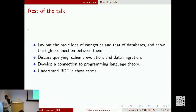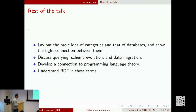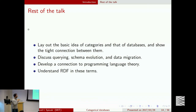In the rest of the talk I'll give a more actual mathematical treatment of the tight connection between categories and databases, and talk about schema evolution, querying, and migrating data. Time permitting, we'll touch on a connection to programming language theory — closer to Haskell and Scala — and the resource description framework (RDF), this unstructured way of talking about data in terms of triples, like 'employee 101, first name Bob; employee 101, last name Smith.'